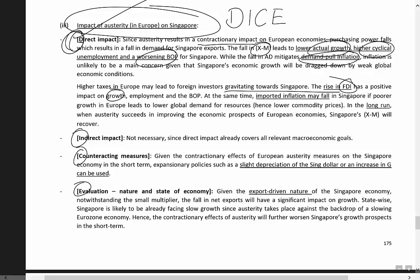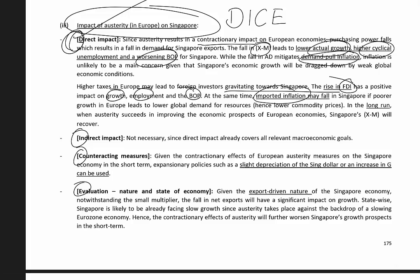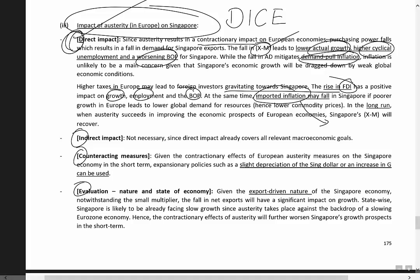The rise in FDI can affect all four macroeconomic goals: actual growth and potential growth rise, cyclical unemployment falls, and the BOP improves through the capital or financial account. Imported inflation may also fall if slower growth in Europe leads to lower global demand for goods and services, meaning lower commodity prices suggest a fall in potential inflation for Singapore — though this is a smaller point, as the link is not as direct as X-M and FDI.